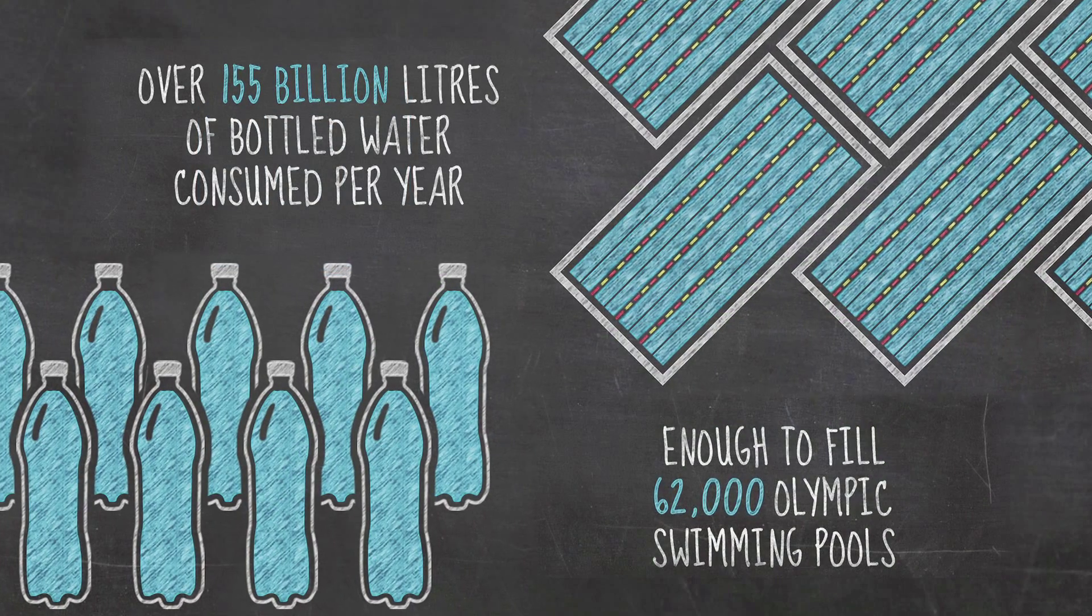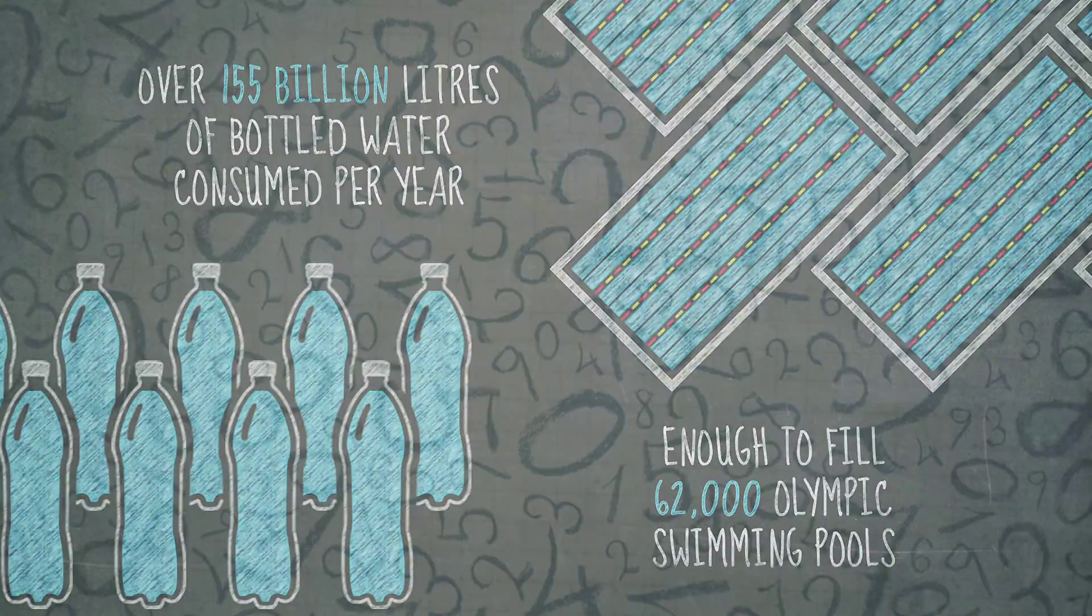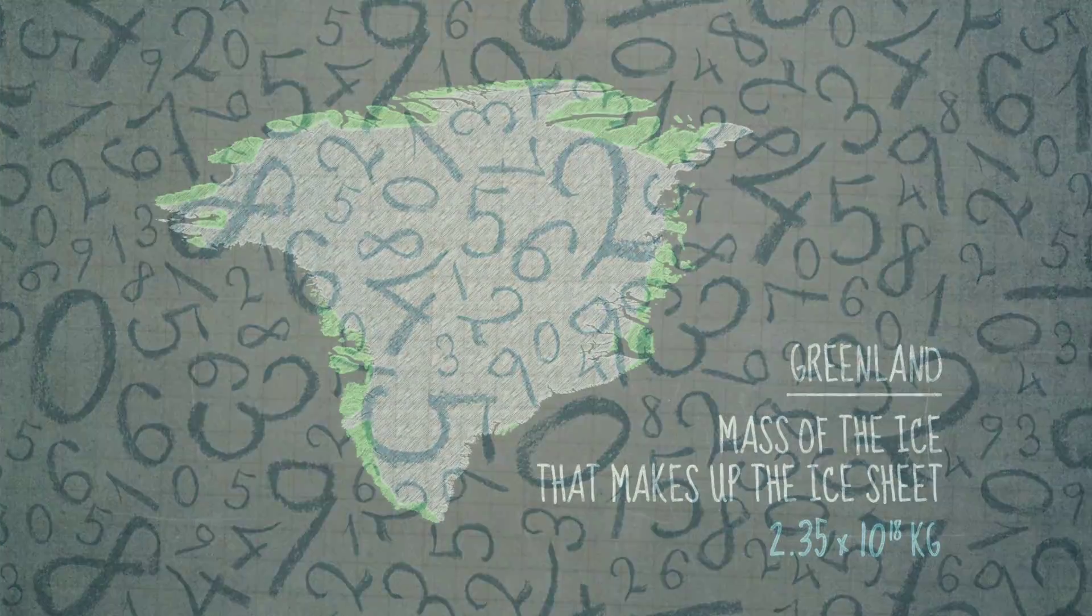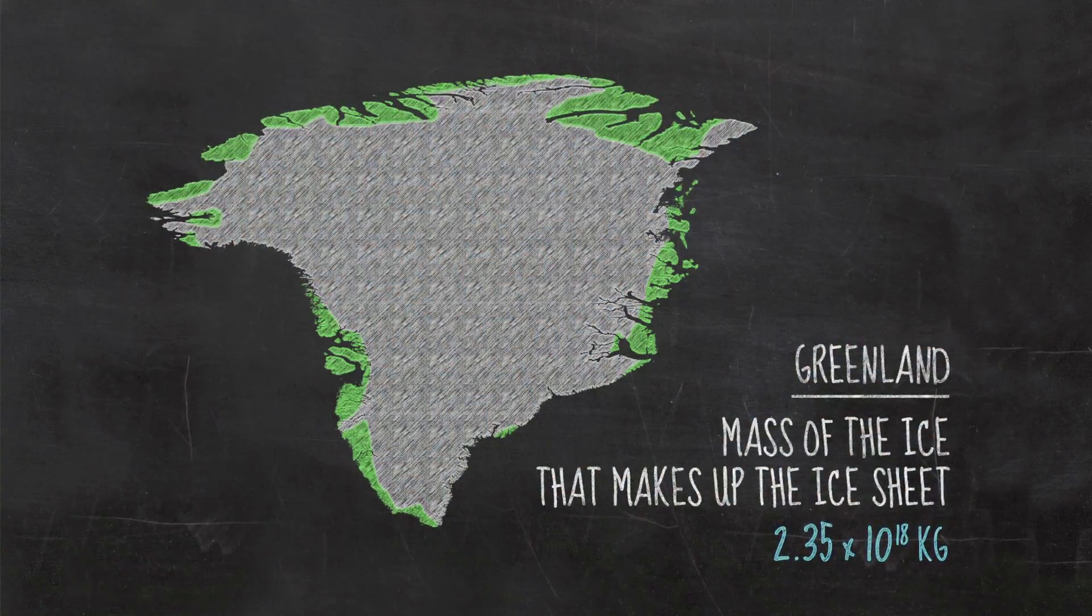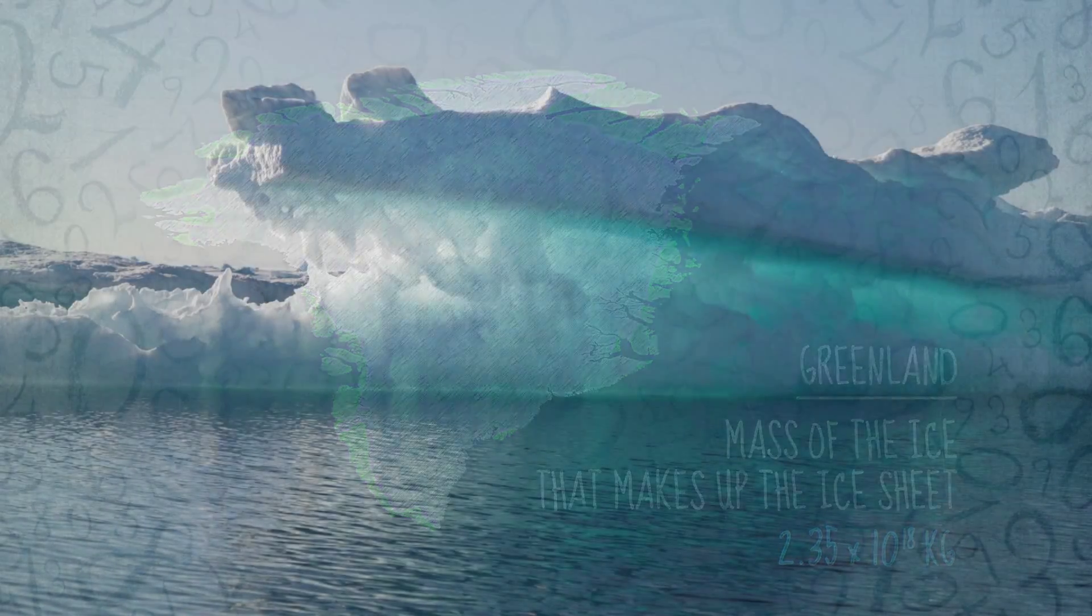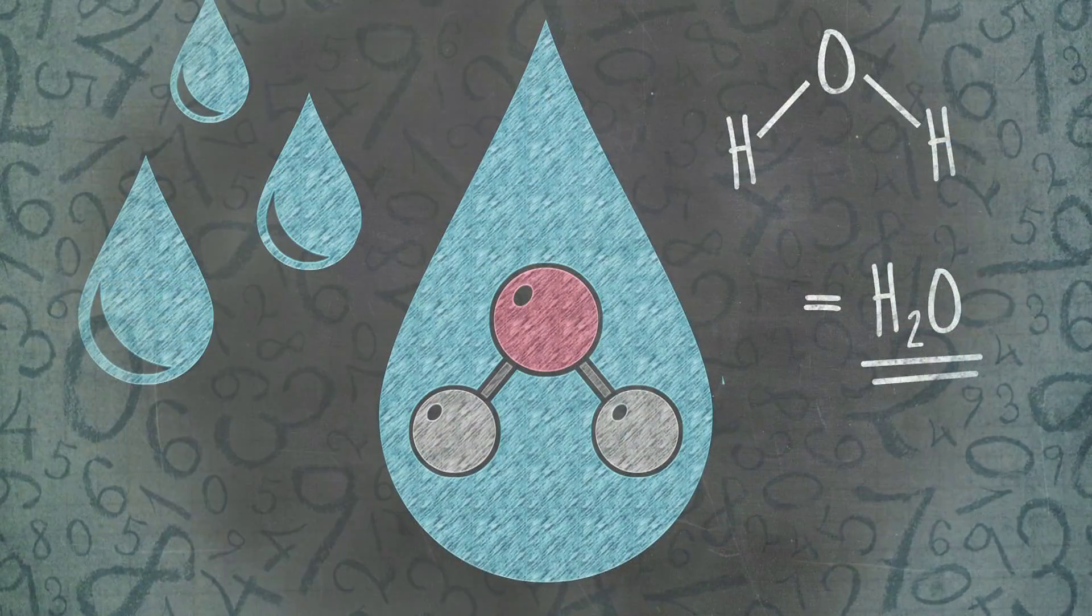Answering questions such as why do scientists need numbers? And how are numbers used to represent the size of the Greenland ice sheet or the number of molecules in a raindrop?